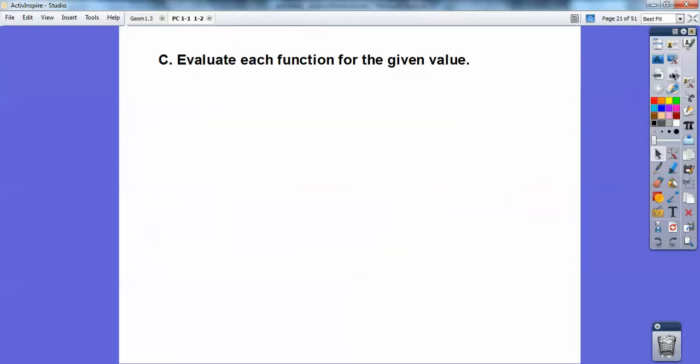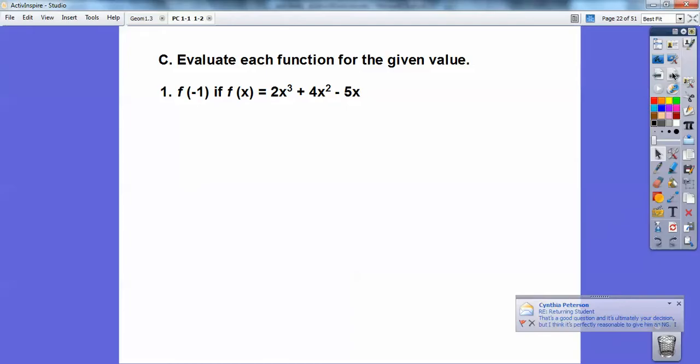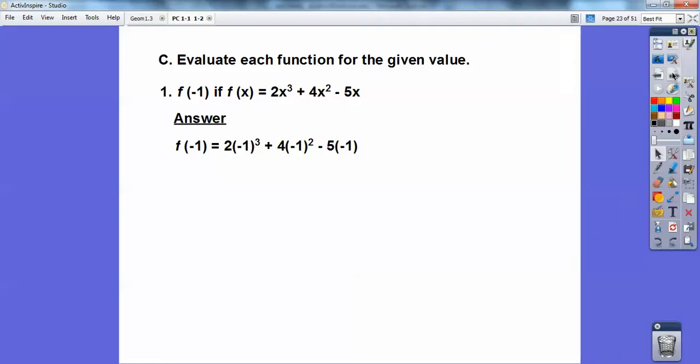All right, evaluate each function for the given value. So f of negative 1. If f of x equals 2x cubed plus 4x squared minus 5x. So you're going to just plug in negative 1 where you see an x and crank it all out. You should get 7.